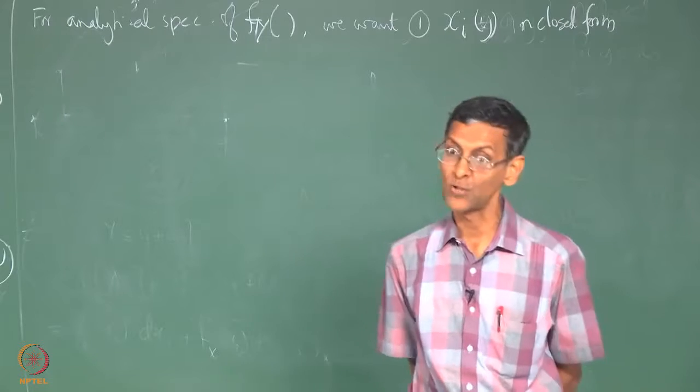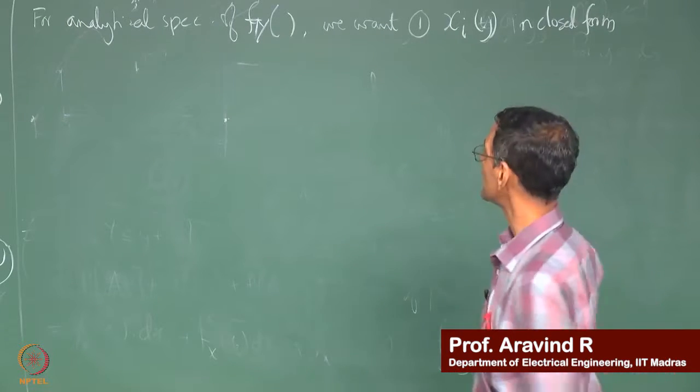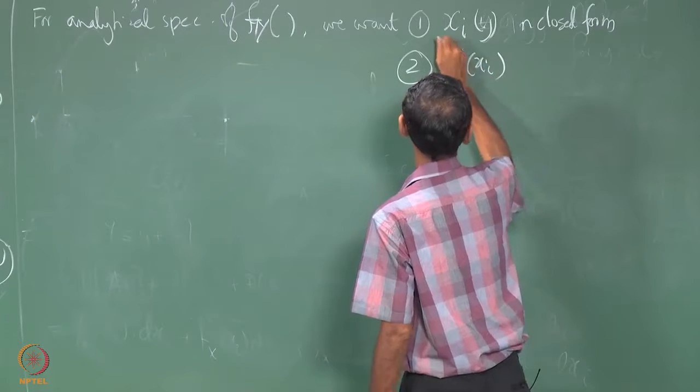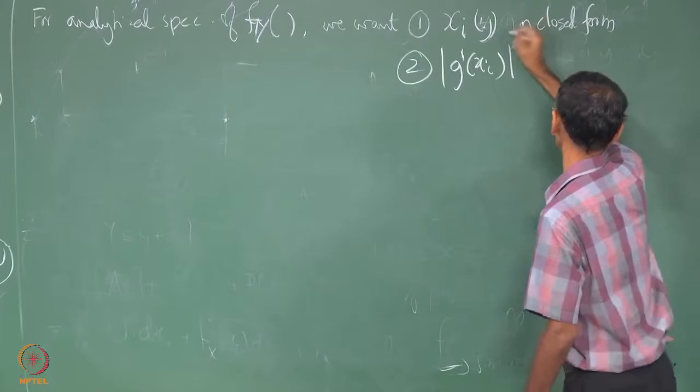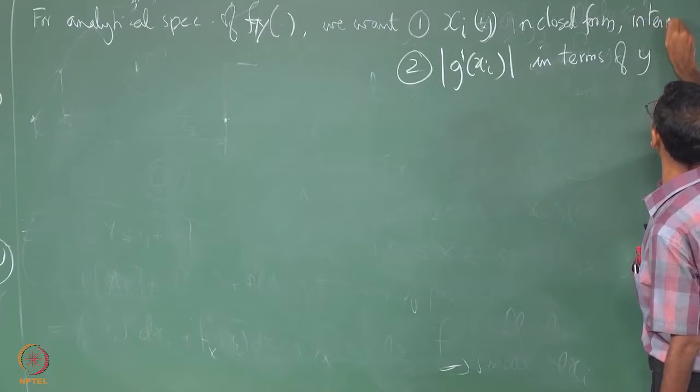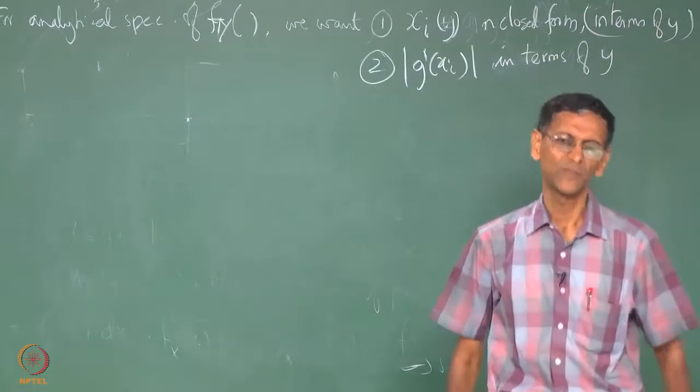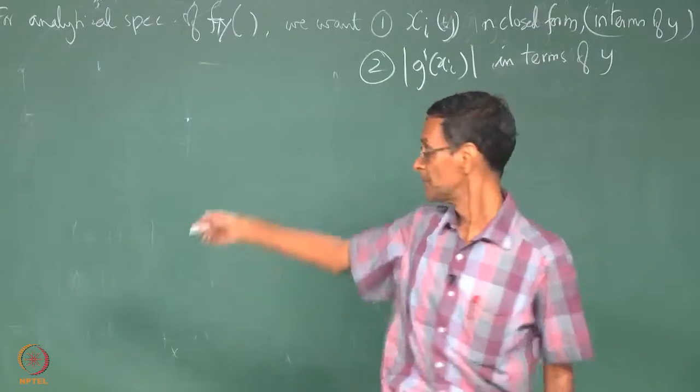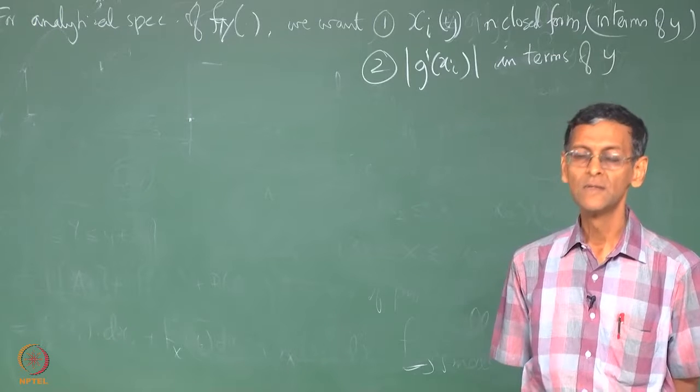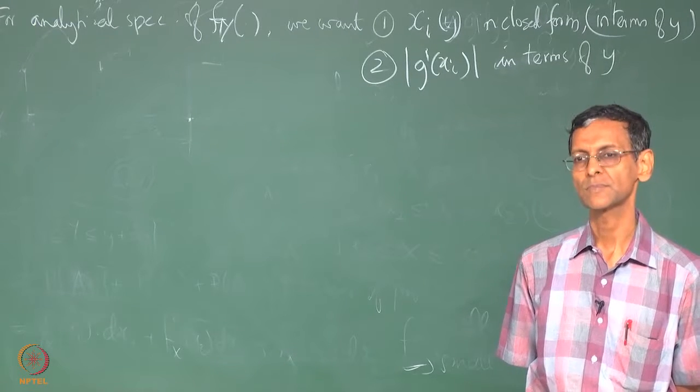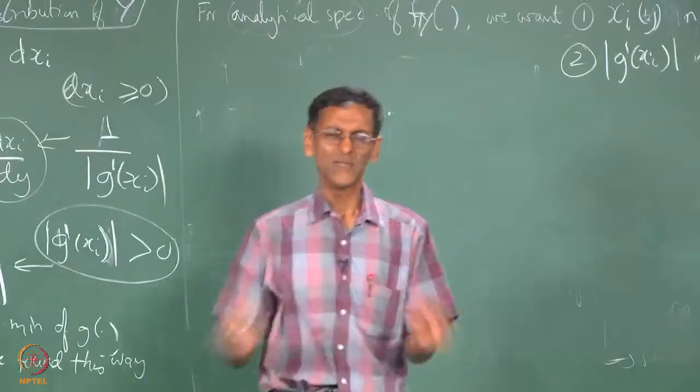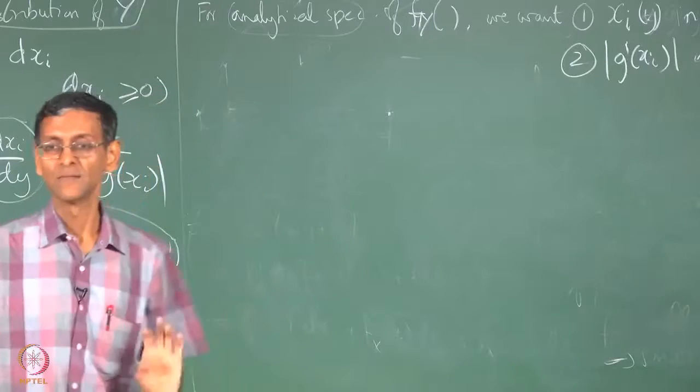For an analytical specification, let me say F_y of the output density, we want two things: we want one X_i as some function G to be expressed in close form, and we also want the derivative, this G'(X_i) as a function of y in terms of y. I want to specify it using a formula, that is what I mean by that phrase out there.